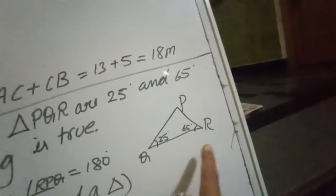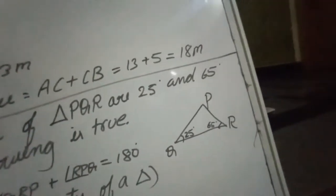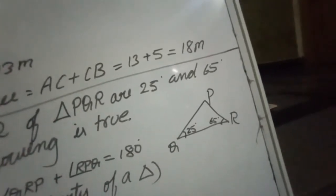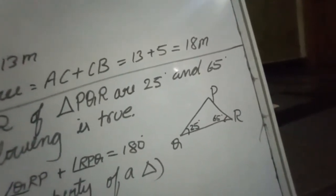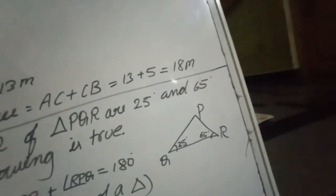Angle Q and R. Let us find out P. 25, 65. If we add 25 and 65, you are going to get 90.